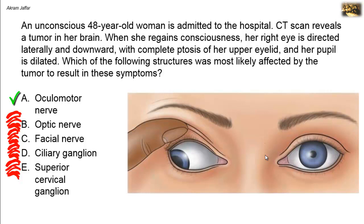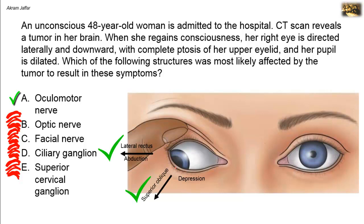Let's review again the function of the extraocular muscles. In this case, the patient's right eye is directed laterally and downward, with ptosis — that's why the upper eyelid is pushed upward by a finger — and the pupil is dilated. This is a typical clinical picture of oculomotor nerve injury or palsy. The lateral rectus, supplied by the abducent nerve, causes lateral deviation of the eyeball. The superior oblique, supplied by the trochlear nerve and still intact, causes the eyeball to go downward and laterally.